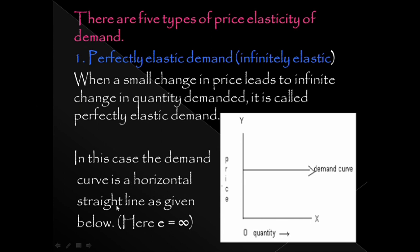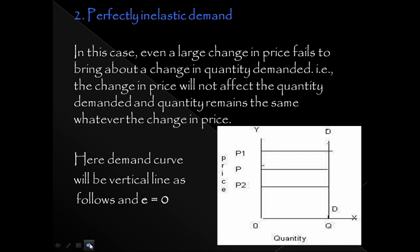In the case of perfectly elastic demand, the demand curve is horizontal. The price does not change, but the demand changes infinitely along the x-axis. A horizontal straight line is the shape of the demand curve. That means E is equal to infinity.